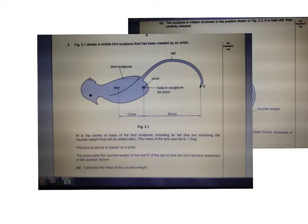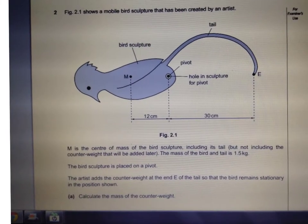So basically, it's a bird sculpture and it says the centre of mass of that bird normally is at M. So it's this point here. And so we pivot it here and whoever's building it basically says, okay, he has to put a mass here to balance this mass so that it stays horizontal.